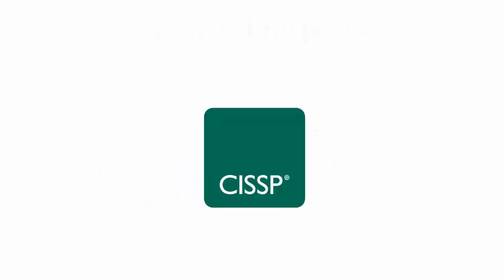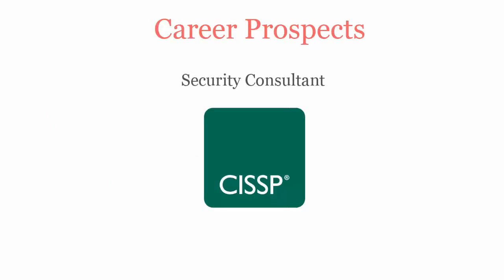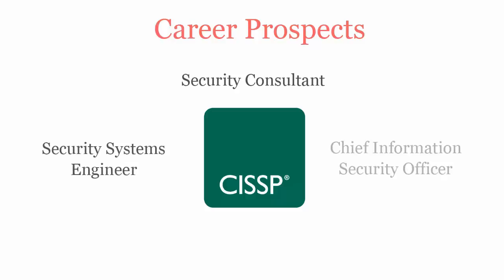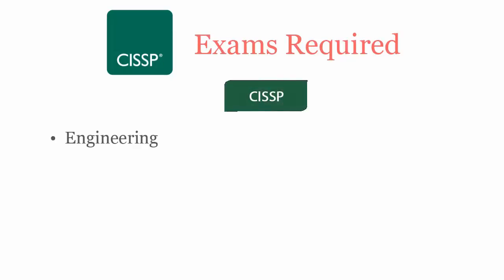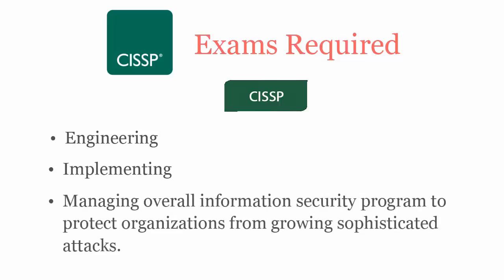Once you pass the ISC2 CSSP certification exam, you'll be recognized as a security consultant, security systems engineer, chief information security officer, and network architect. To be an ISC2 CSSP certified professional, you will have to pass the CSSP exam, which covers engineering, implementing, and managing the overall information security program to protect organizations from growing sophisticated attacks.